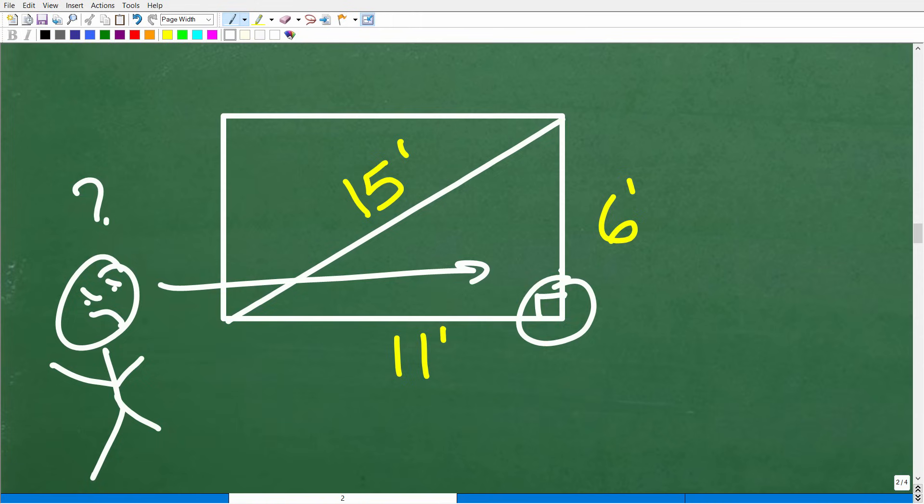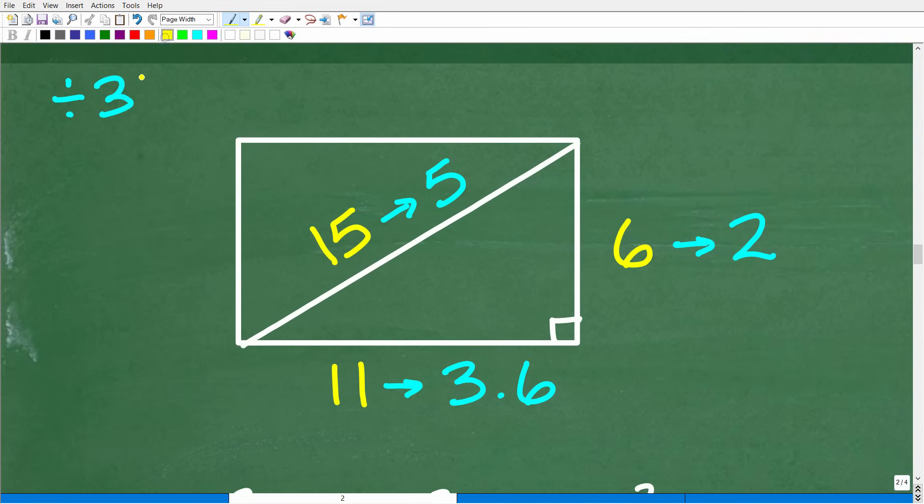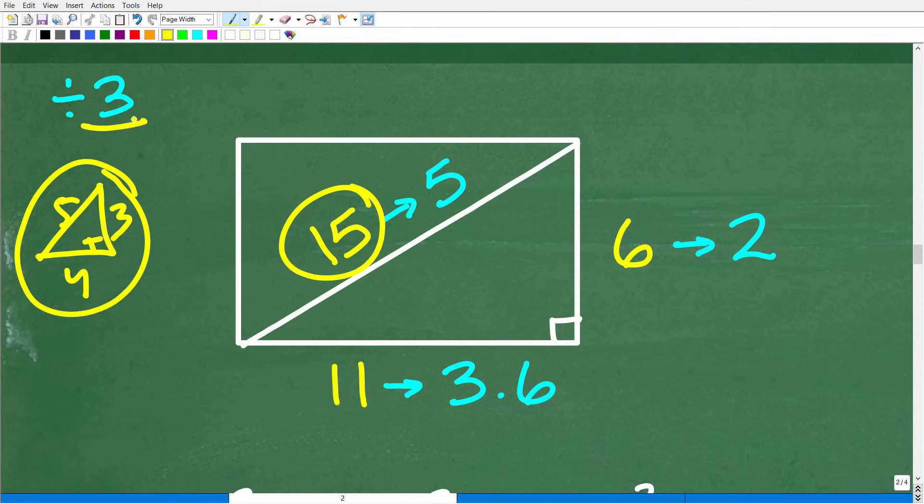Okay, so what could we do here? Well, we could use the Pythagorean triple here, right? We could think about our little 3-4-5 right triangle. So we have a 15, and say, well, I know my 3-4-5 right triangle, so if I divide this 15 by 3, I'll end up with a 5. So that's interesting, that's like my 3-4-5 right triangle. So if I'm going to divide the 15 by 3, I've got to divide everything by 3. So the 6 divided by 3, that's going to be a 2, okay? And then 11 divided by 3, roughly that's going to be 3 point a little bit over 3.5. It's actually around 3.6.